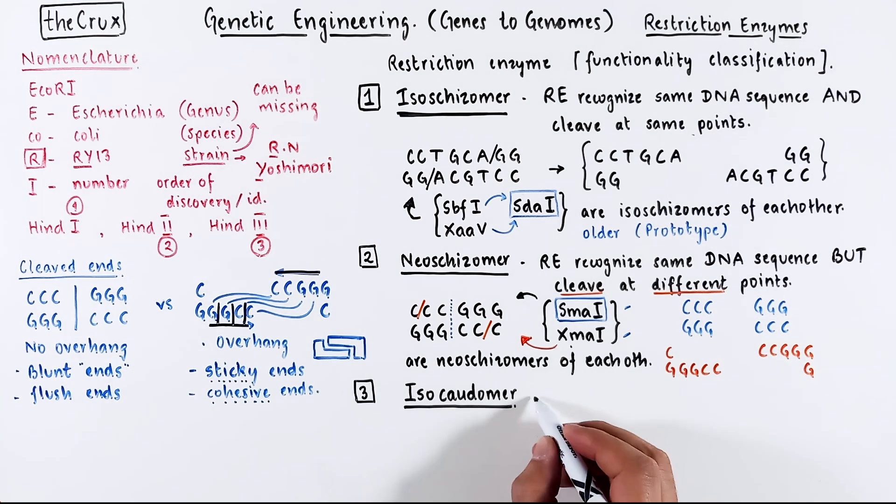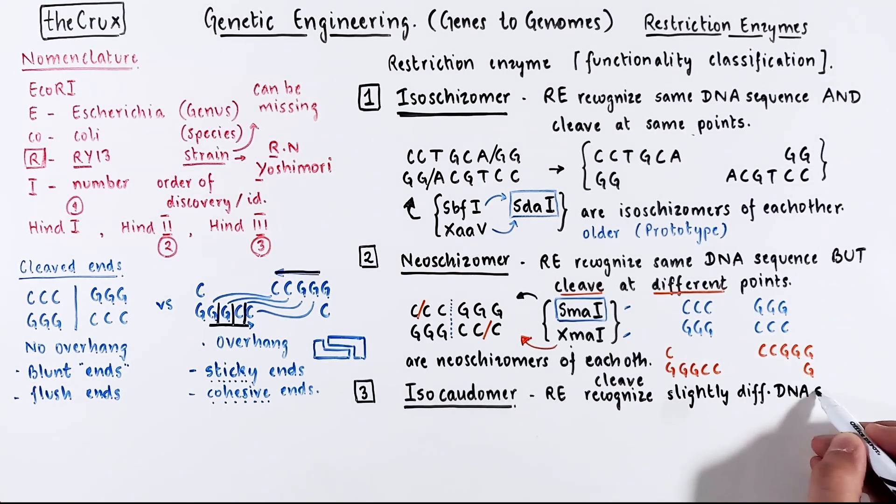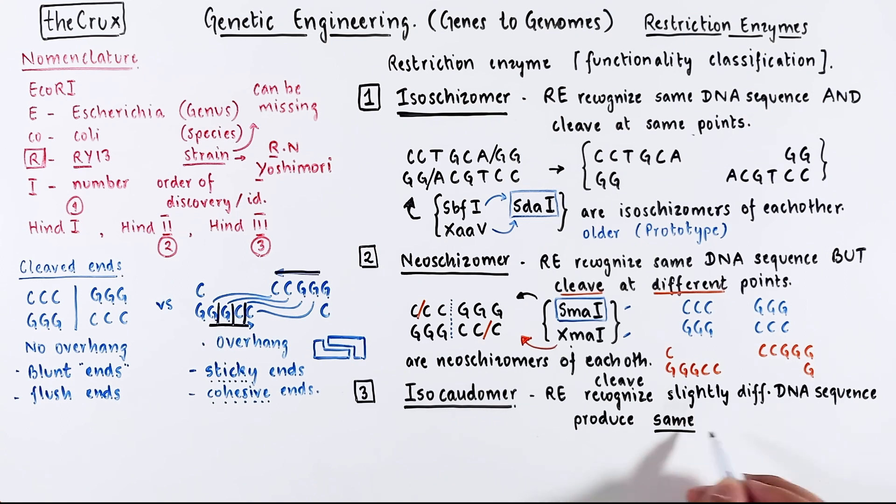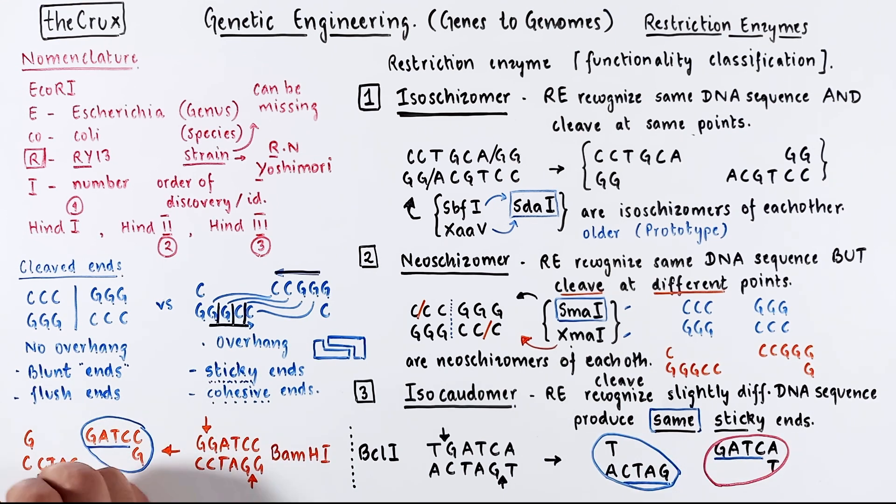So isocaudomers are a set of restriction enzymes that recognize and thereby cleave different DNA sequence but the resulting sticky end is the same. Take BCL1 for example which cuts TGATCA and gives you a sticky end that looks like this. Compare this with BAMH1 which cuts GGATCC. A slightly different sequence but if you compare the sticky ends they're the same as BCL1. This means that the DNA ends produced from these two enzymes can stick to each other. So we say that BAMH1 and BCL1 are isocaudomers.